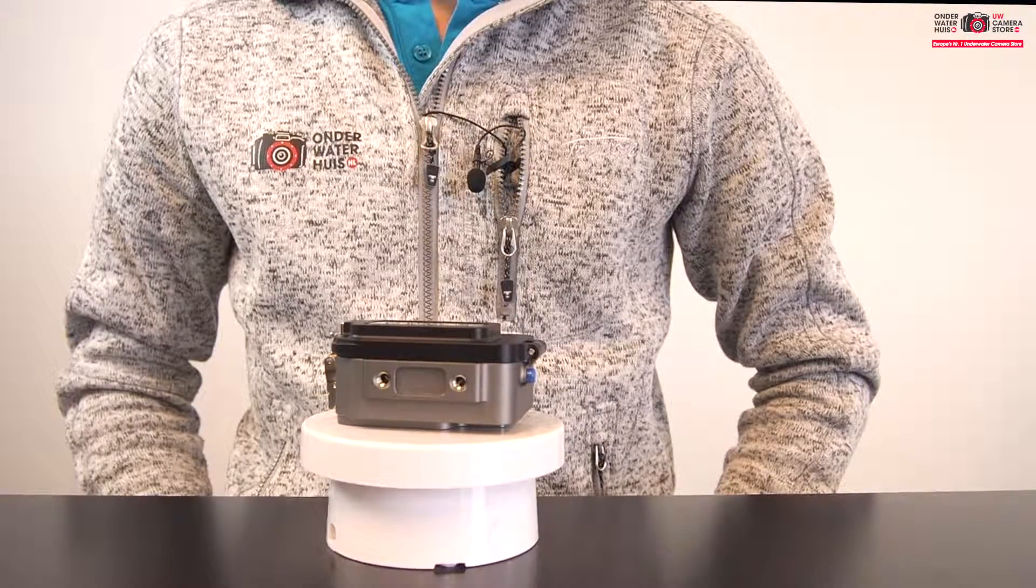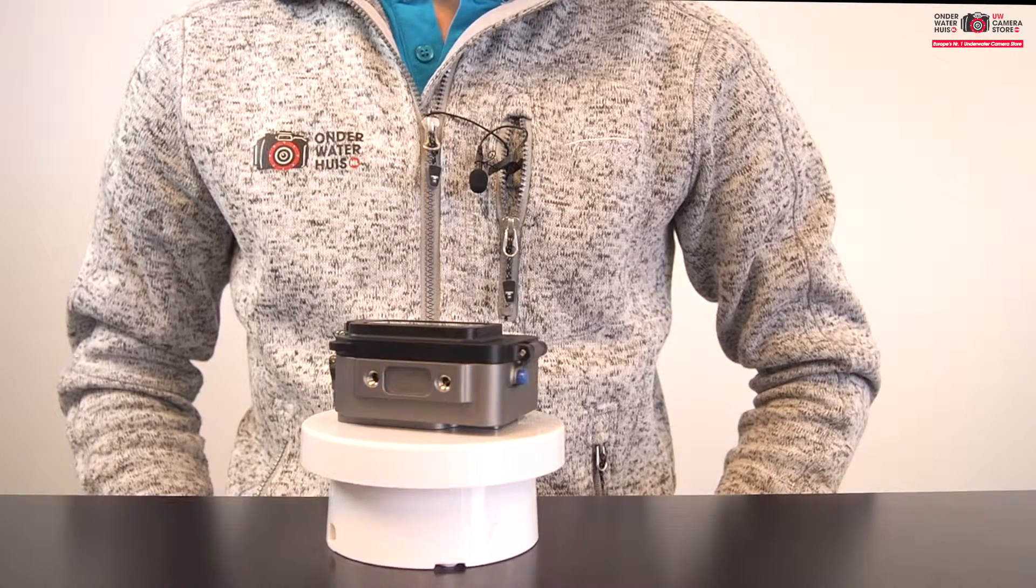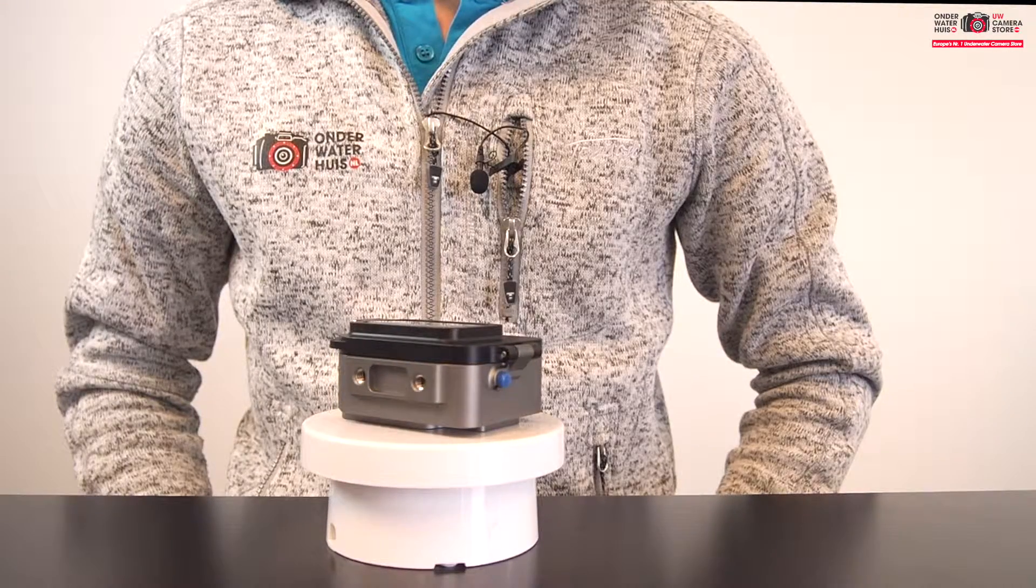The T housing has two screw threads so you can easily and safely mount a tray underneath the housing to get smooth footage.